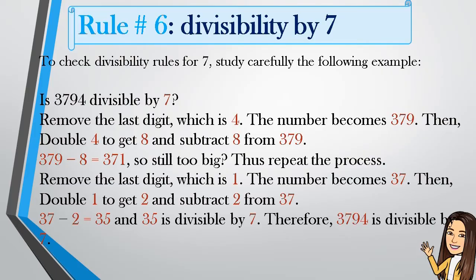371 is still too big, so we repeat the process. Remove the last digit in 371, which is 1. The number becomes 37. Then double 1: 1 times 2 equals 2. Subtract 2 from 37: 37 minus 2 equals 35. Now, is 35 divisible by 7? Yes, it is divisible by 7. Therefore, 3794 is divisible by 7.